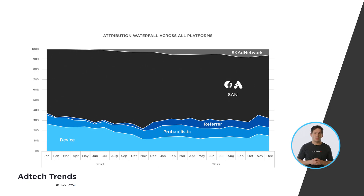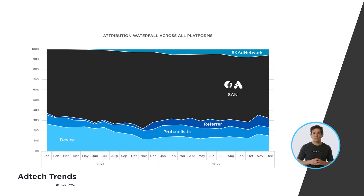We started out looking at iOS in the U.S., but as we broaden our perspective, we see the SCAD network from Apple is responsible only for a small portion of attribution, which you can see at the very top of this chart. And while Apple as a publisher is growing, it's important to realize there are current opportunities to provide more visibility to your media using already accepted methods.